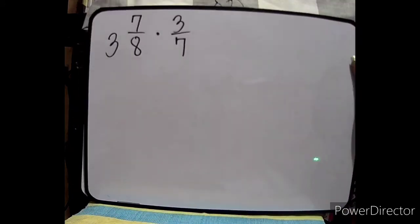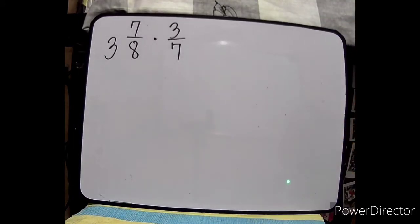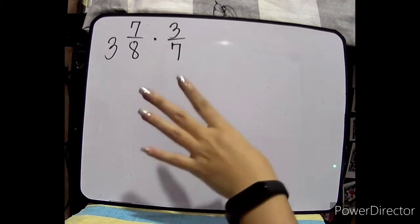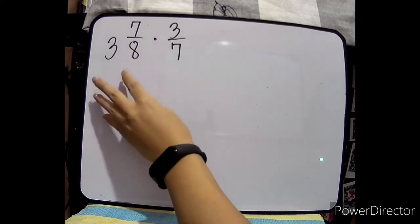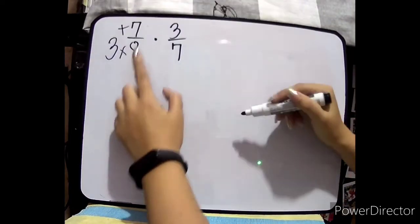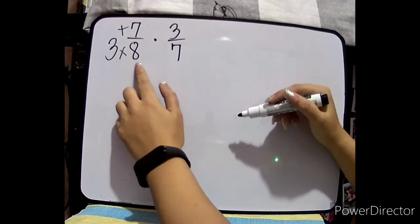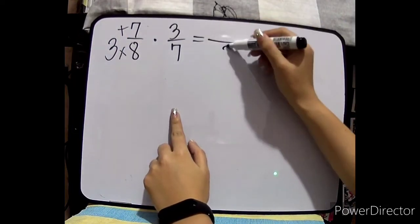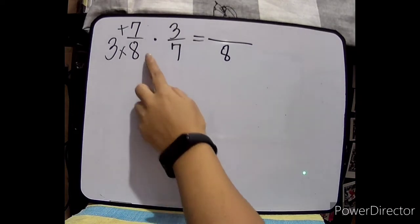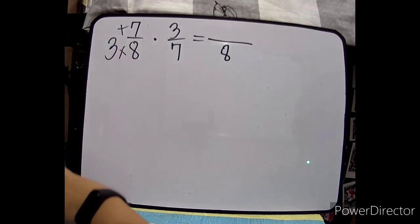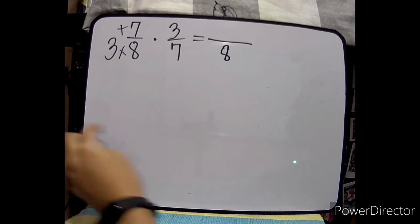Let me continue. Another example — this time it involves a mixed fraction, actually a whole number. We can't just directly multiply it. So if this is the case, you need to change it into an improper fraction by multiplying the denominator by the whole number and adding the numerator. So 8 times 3 is 24, plus 7 is 31.